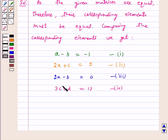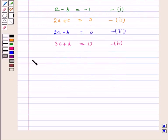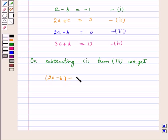Now, we will solve all these equations. First, on subtracting equation 1 from equation 3, we get (2A minus B) minus (A minus B) equals 0 plus 1, which implies A equals 1.